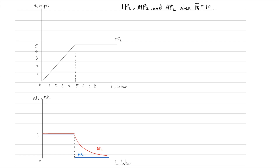Suppose capital is fixed at 10 units. The marginal product of labour equals 1 up to 5 units of labour, and it is zero after that — shown as the blue line in the diagram. The average product of labour is the slope of the straight line that connects the origin to the points on the total product of labour curve. It equals 1 up to 5 units of labour and then drops gradually — shown as the red curve in the diagram.